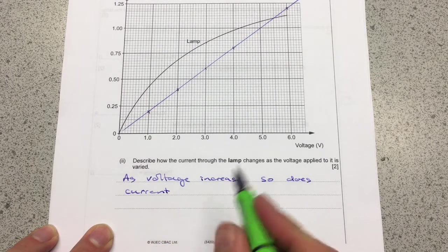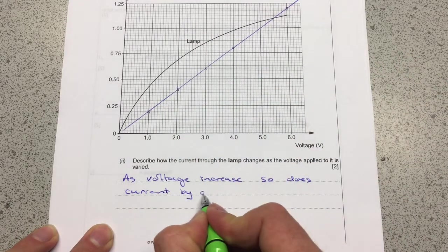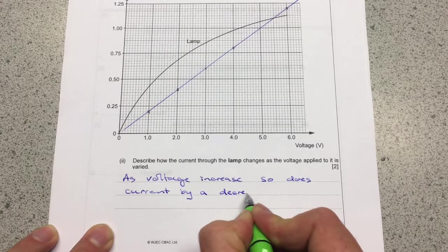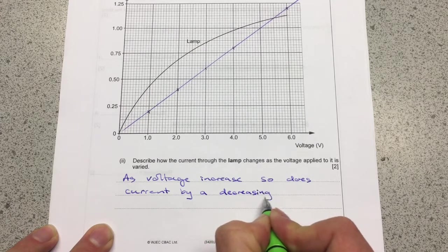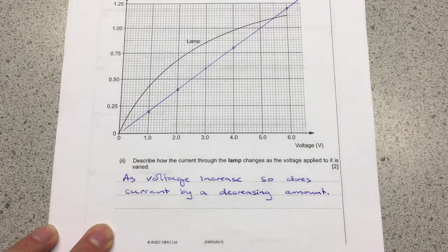In order to score the second mark you need to say something about the fact it's a curve by a decreasing amount. And that will score you the second mark on the end of this question.